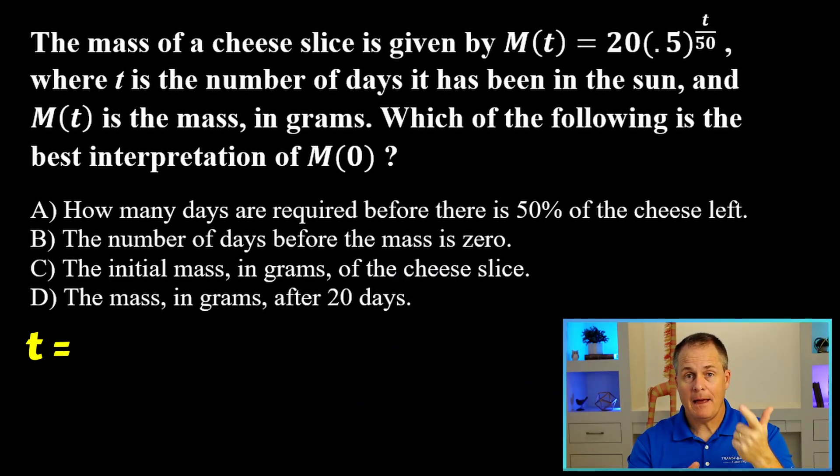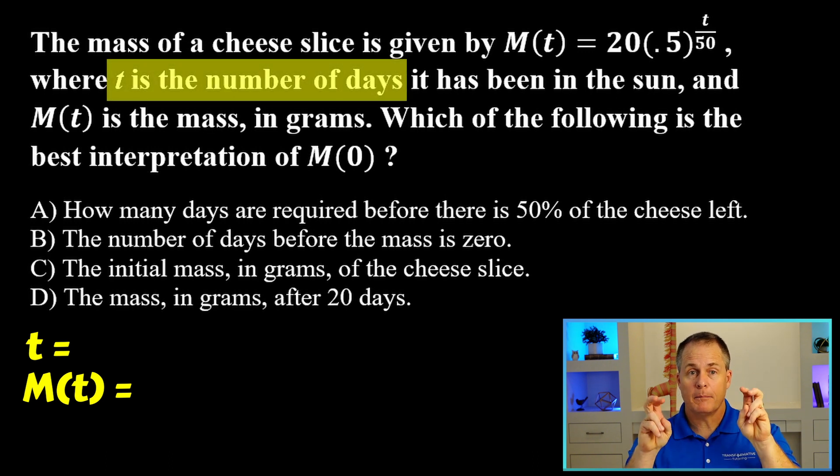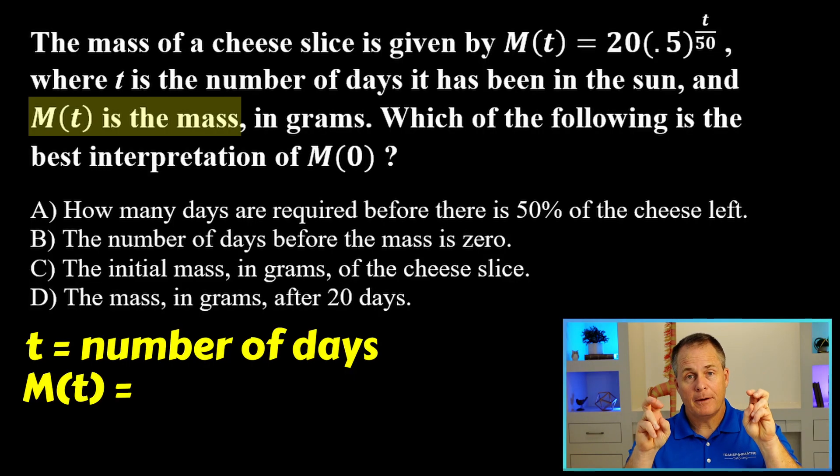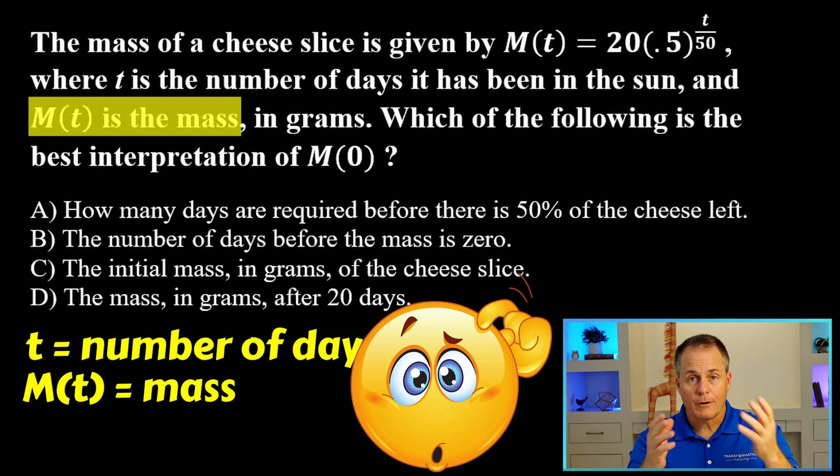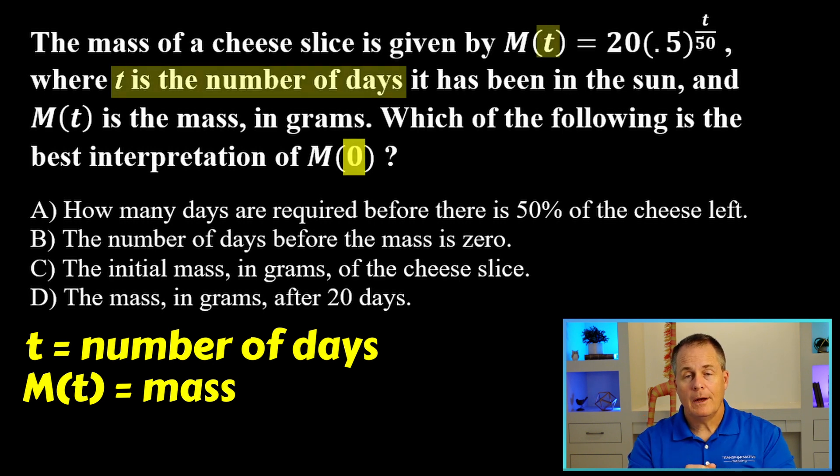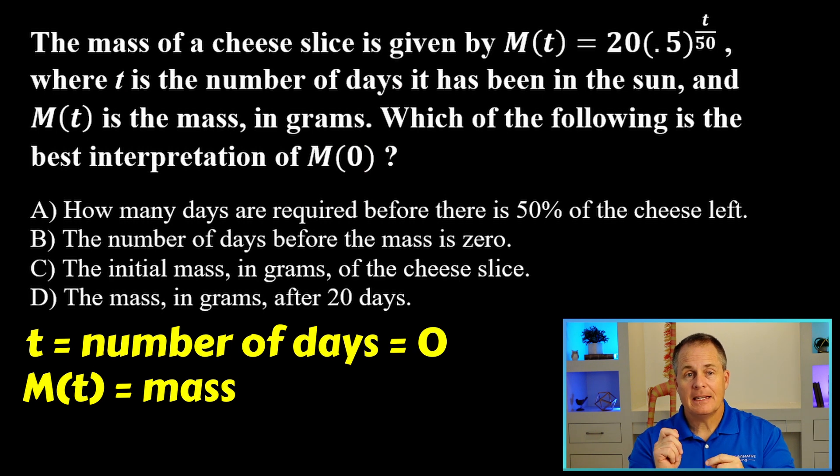What is t and what is M(t)? And so t here is the number of days that the cheese has been in the sun. And M(t) is the mass. And now we look for our ordered pair in disguise. Well, they actually didn't give us an ordered pair this time. They only gave us M(0). So is that zero the mass or is that zero the number of days? Well, it's the number of days. So if t is zero, what that means is that's the starting amount. It's like the y-intercept. So that's going to be the initial mass of the cheese.